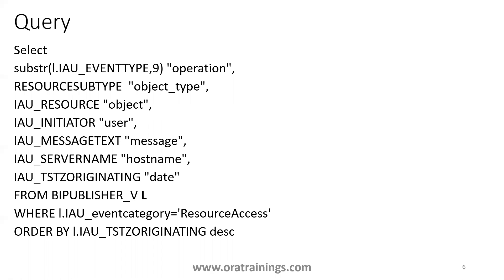Here, if you observe a simple query based on this bi_publisher view: this view is based on the IAU tables and has a specific naming convention — different column names. We need to find out which column is for which purpose. For example, the first column 'event_type' means operation, 'resource_subtype' means object type, 'resource' means object, and so on.